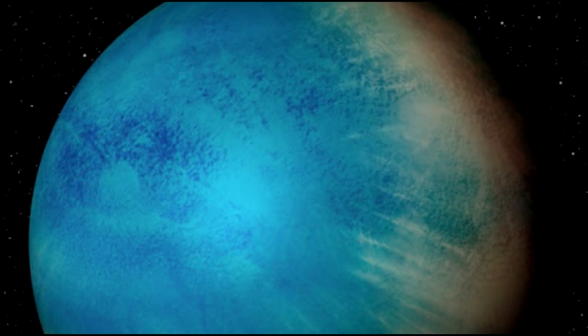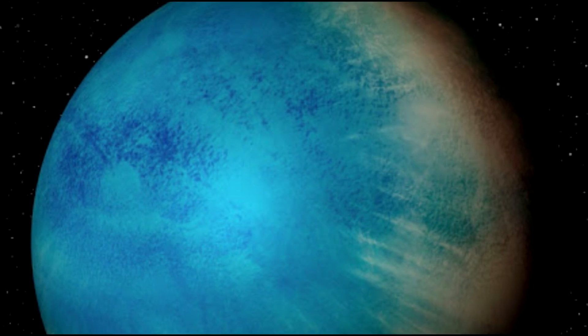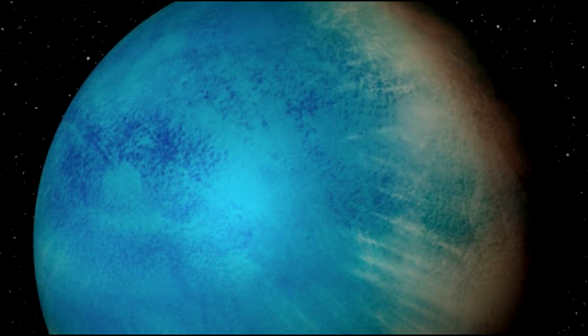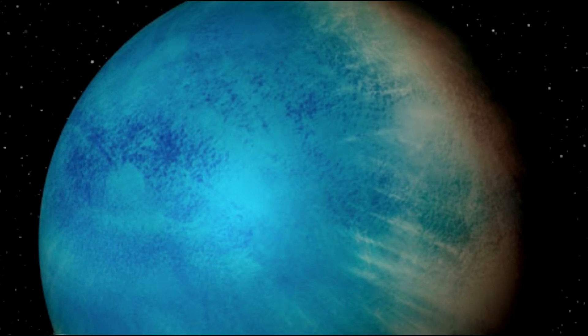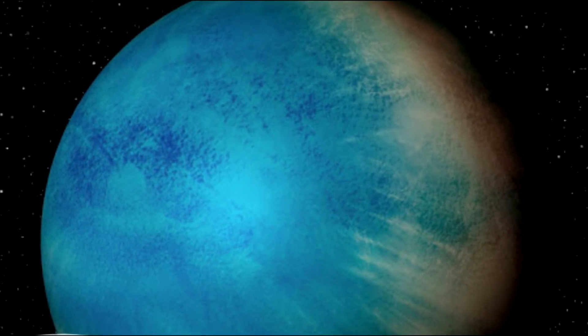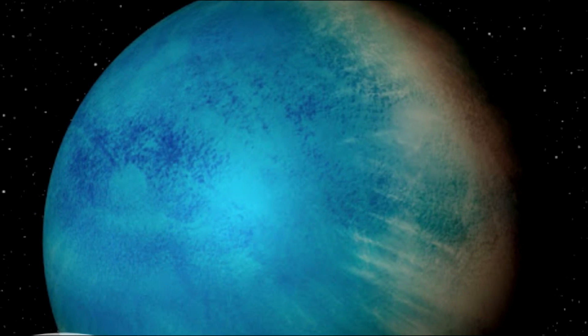Water may account for up to 30% of TOI-1452b's mass, a proportion close to that of some natural satellites in our solar system, such as Jupiter's moons Ganymede and Callisto, and Saturn's moons Titan and Enceladus.